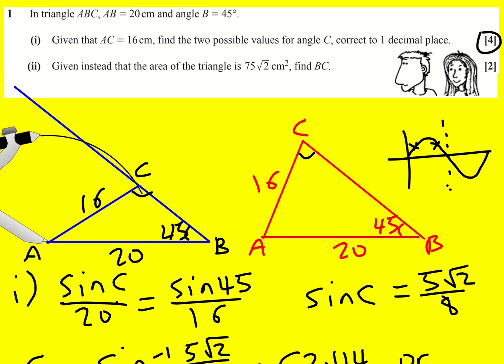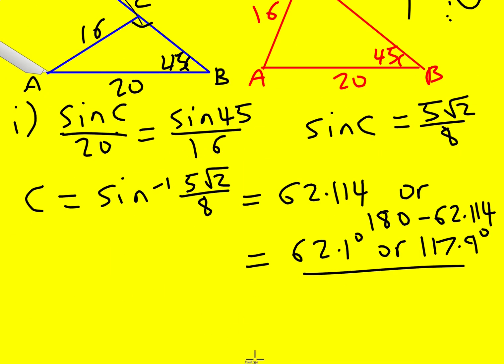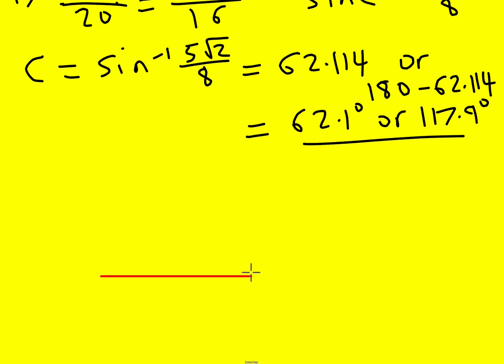Given instead that the area of the triangle is 75 root 2, find BC. So this time I've still got my AB, still got my 45 degree angle. So 20, this is 45 degrees.